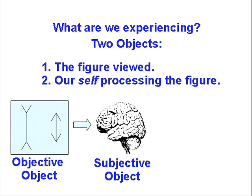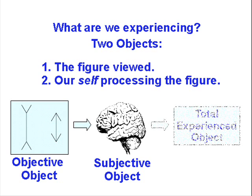Thus, our total experience contains information on two objects. The external object that we are looking at, and an internal object, or subjective object, which is our self. In experiencing things, we learn about our self, as well as about the thing that we are experiencing. Thus, the total object experienced consists of an objective, external object, and a subjective object, which is information about ourselves.